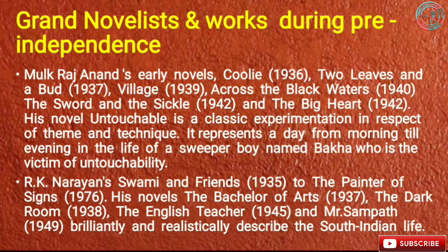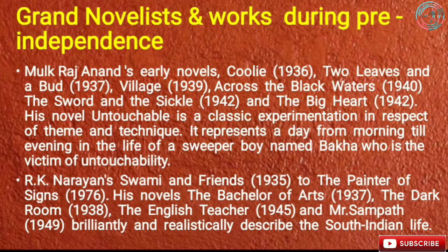Now the grand novelists and works during pre-independence. Mulk Raj Anand's notable novels include Coolie, Two Leaves and a Bud, A Village, Across the Black Waters, The Sword and the Sickle, and The Big Heart. His novel Untouchable is a classic experimentation in respect of theme and technique. It represents a day from morning till evening in the life of a sweeper boy named Bakha, who is the victim of untouchability.